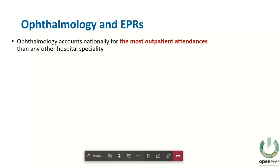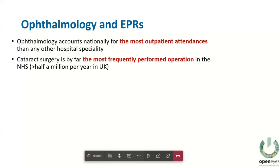We have more outpatient attendances than anywhere else in the hospital. Cataract surgery is the most frequently performed operation — half a million done per year. On top of that, there are complexities around the risk of doing the wrong eye or the wrong lens implant, and technology can be used to improve safety. Having bespoke software for ophthalmology does a far better job than most of the generic systems.